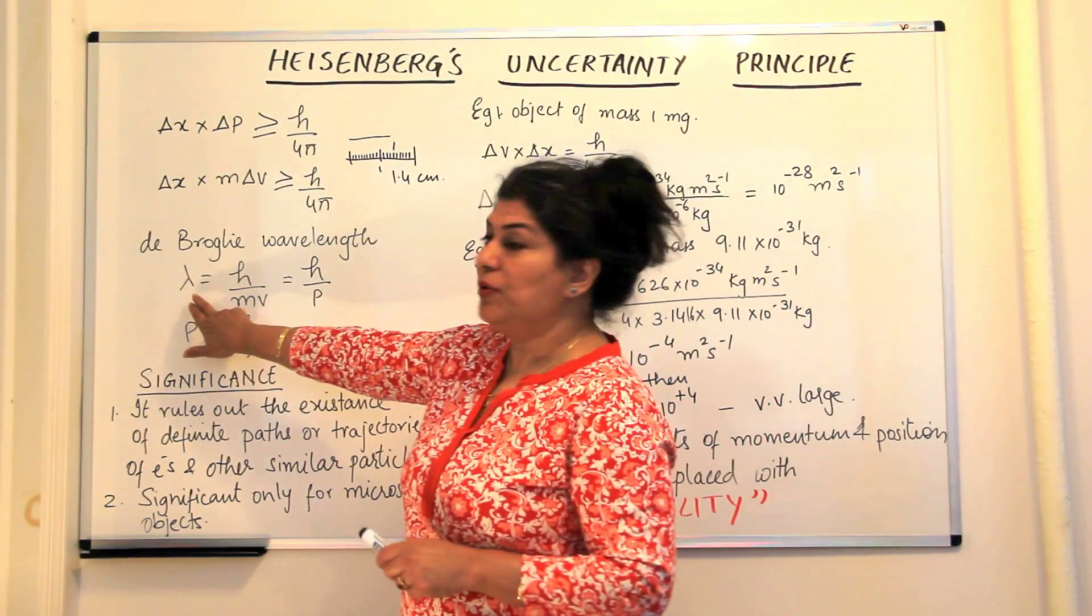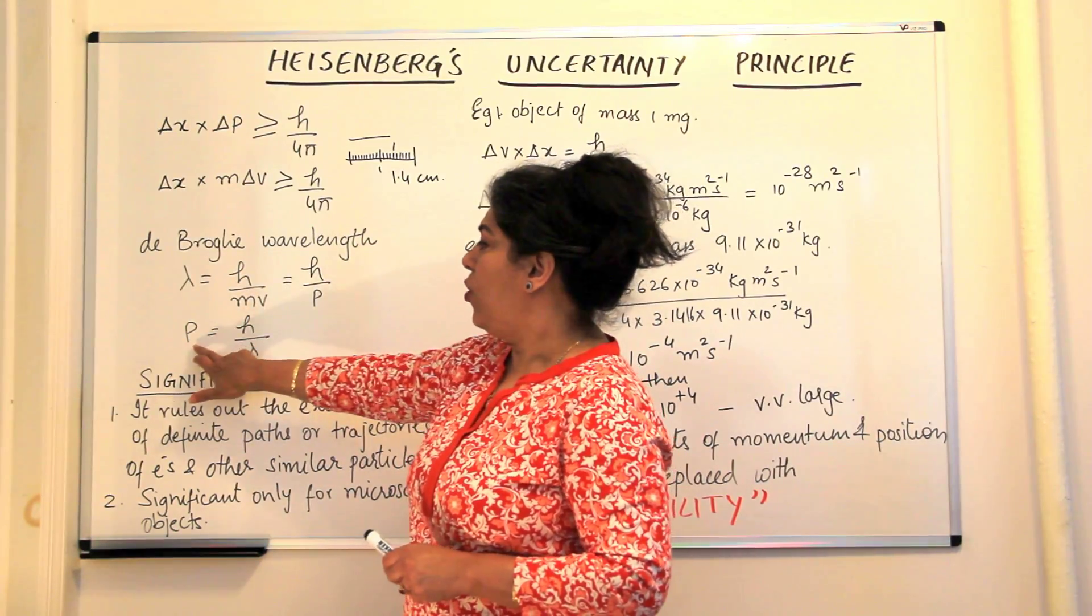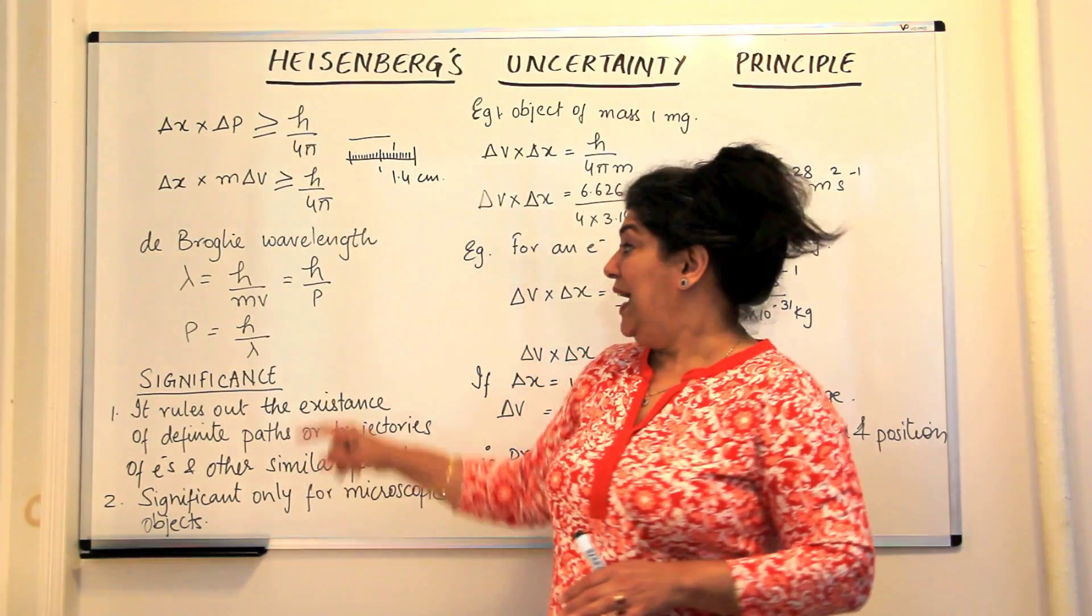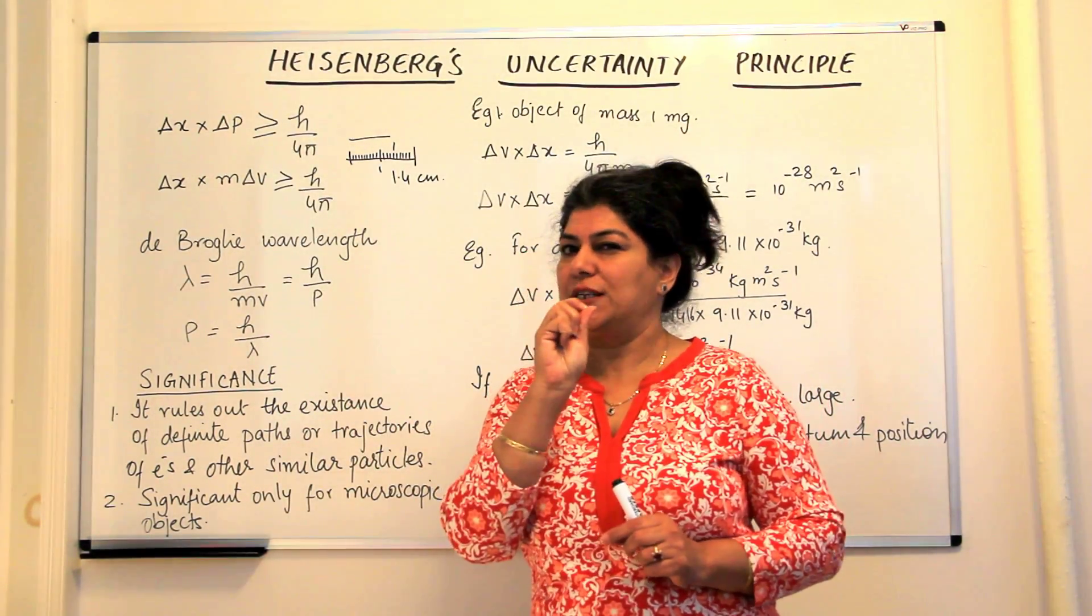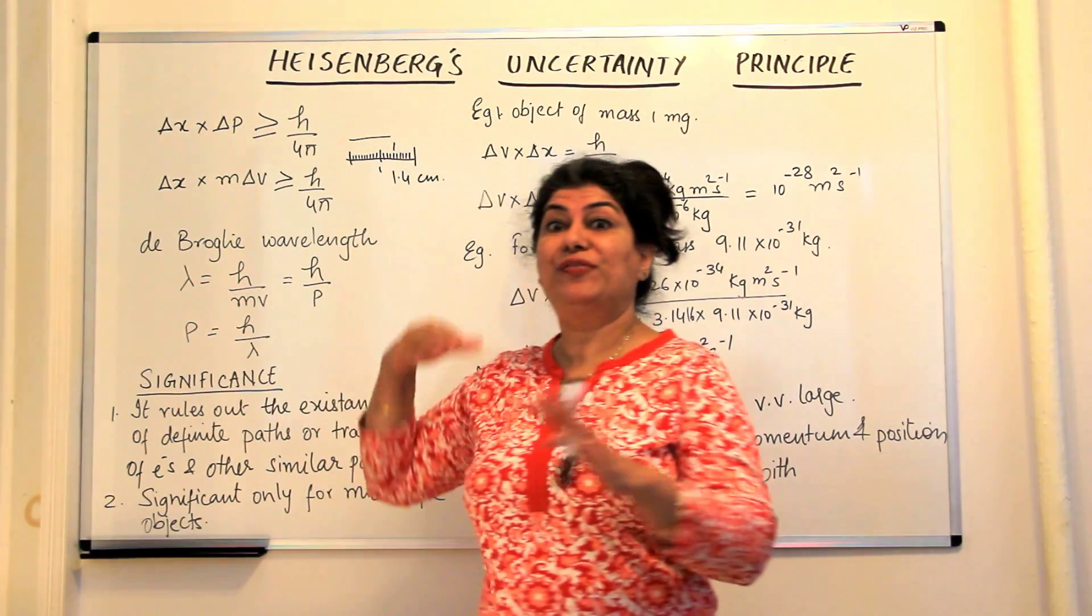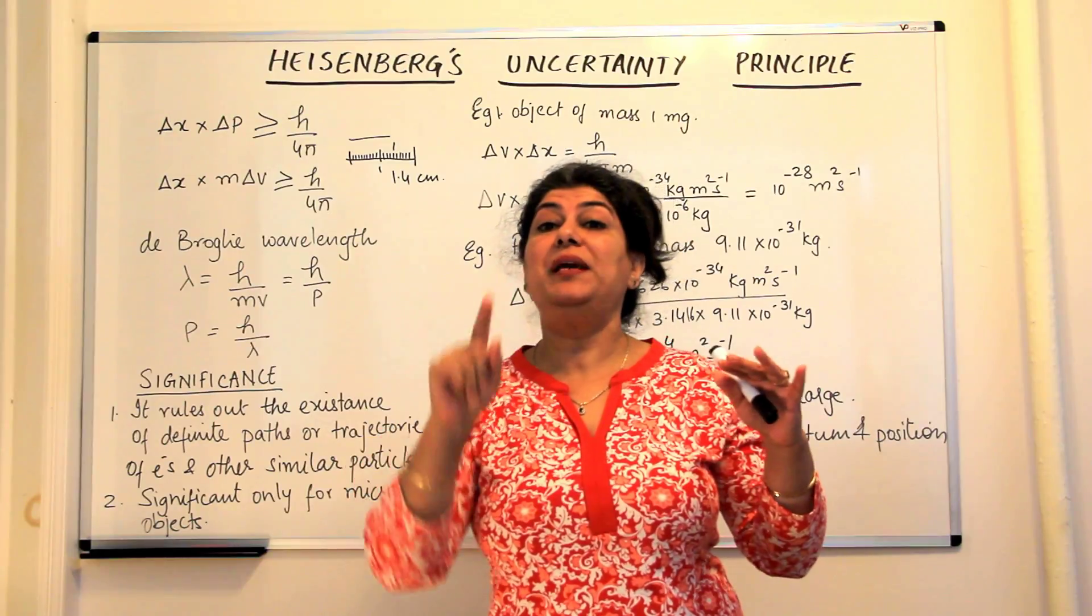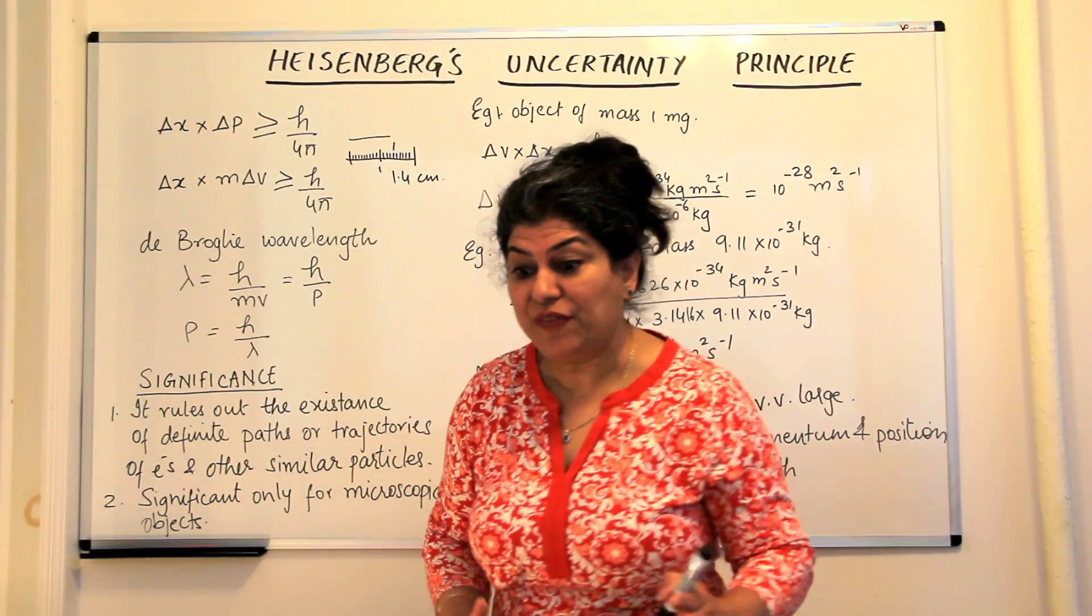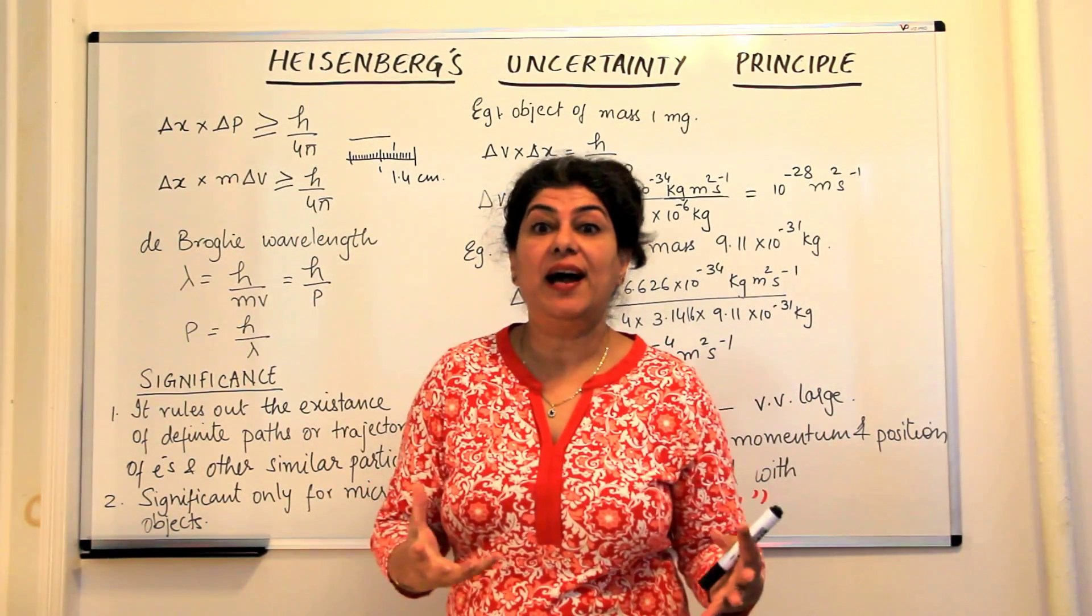Now, the problem with that was, de Broglie had told us that wavelength equals h over mv, or the momentum and wavelength are inversely proportional. If the wavelength is very, very short, then the momentum of the incident radiation would be very high. In other words, it will be a radiation with a high frequency.